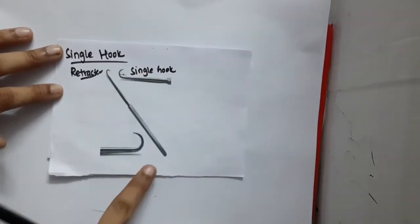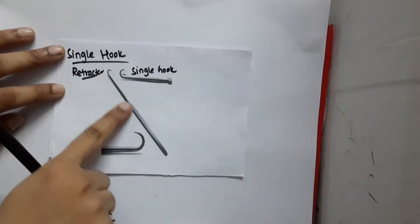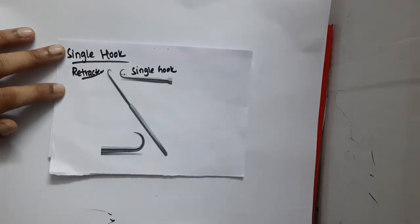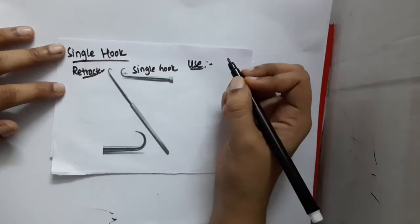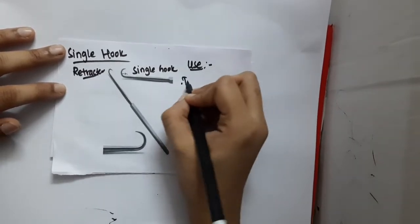You can see there is a handle and there is a blade here. There is one hook, so this is a single hook retractor. So what is the use of the single hook retractor? It is used mainly to retract the edges of the skin.